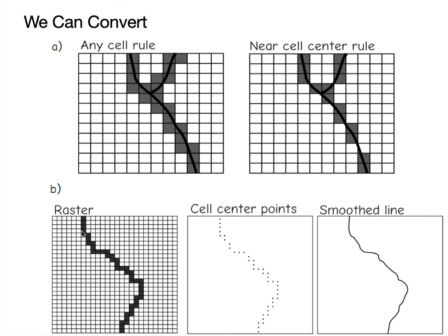We can also take a raster and convert it to a vector. The center of each cell can be considered occupied, giving a set of vertices which you then connect. We can smooth that line to give it a better appearance — though we're not necessarily improving the accuracy of the data; we're taking a zigzag stair step and making it look more like a river or road might look. So we can convert back and forth. We want to choose wisely when we first develop a data set — both the grain size and whether it's raster or vector — but we can convert if we need those data in another data model for subsequent analysis.